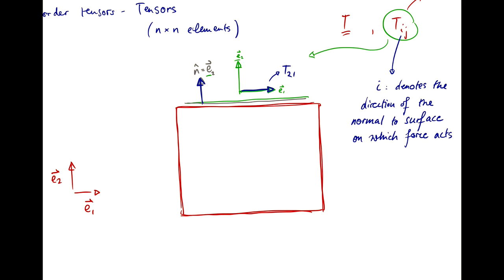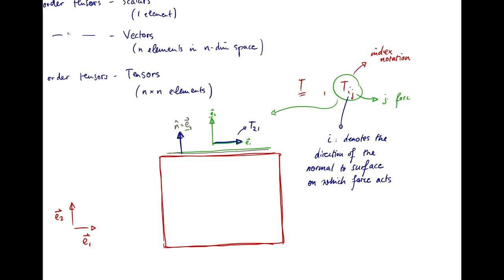Whereas, the second index J is the force component direction. So, the one that we just saw is T21, i.e., it acts on the surface with a normal in direction 2 and it acts in direction 1. Whereas, this tensor element here acts in direction 2 on the same surface that has the normal in direction 2. So, T22.